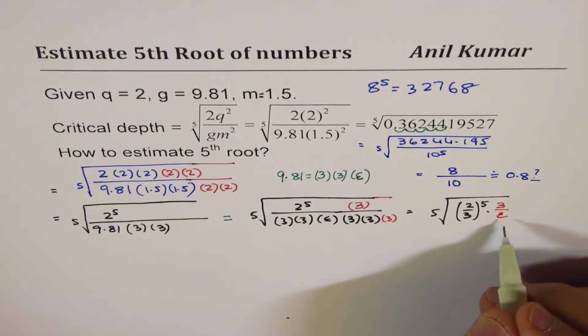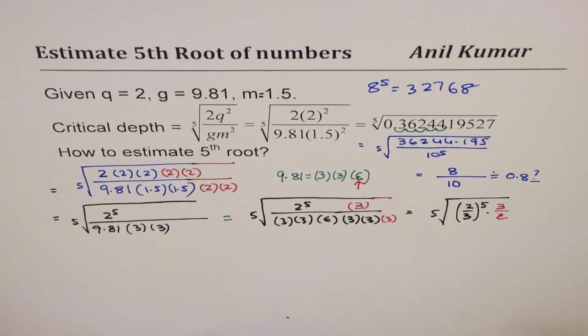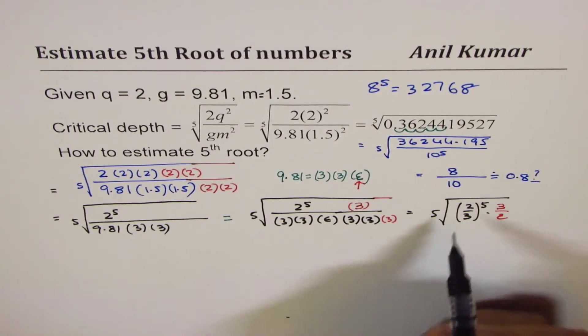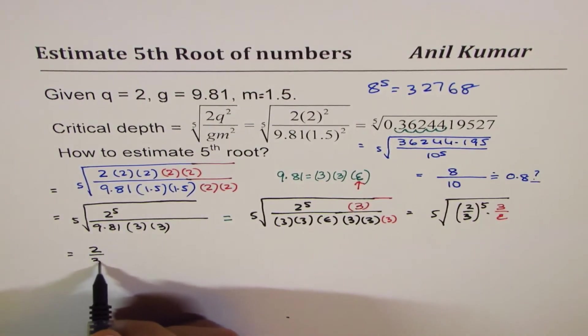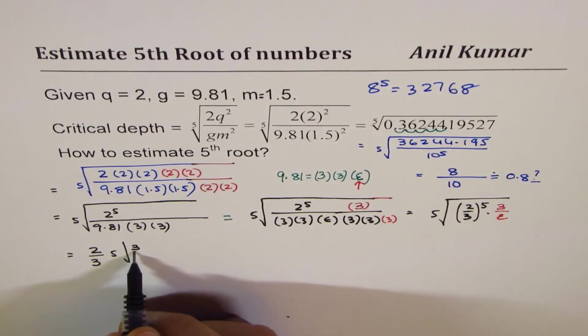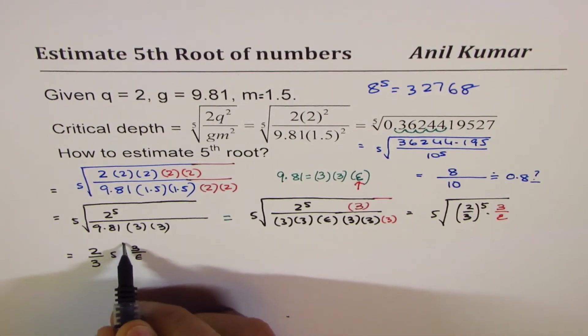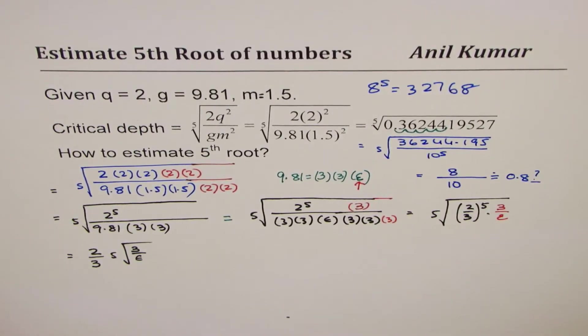So what we land up with is the fifth root of 2 over 3 to the power of 5 times we have 3 here divided by some error e. So that's the error e. Now this is equal to 2 over 3 times fifth root of—times fifth root of—divided by some error.